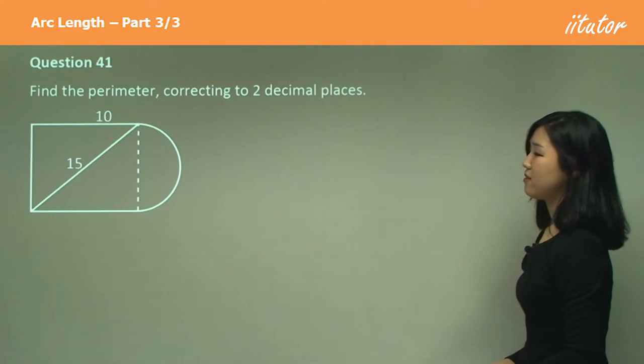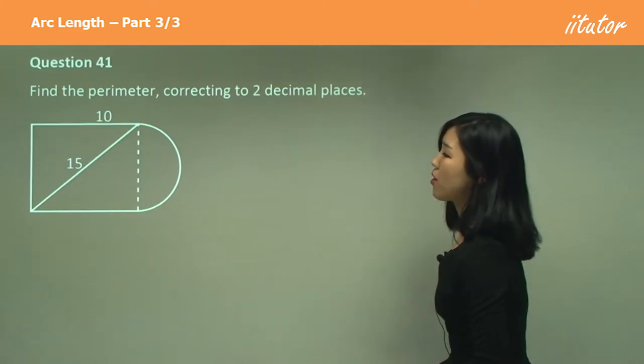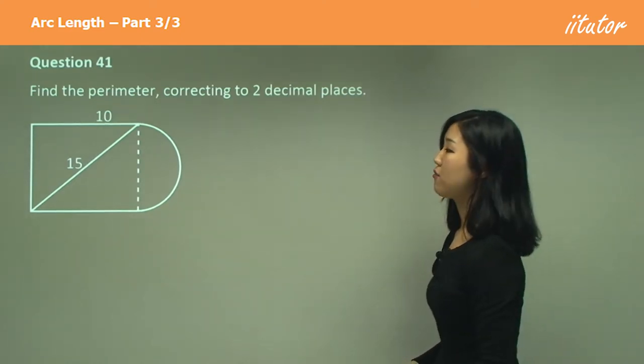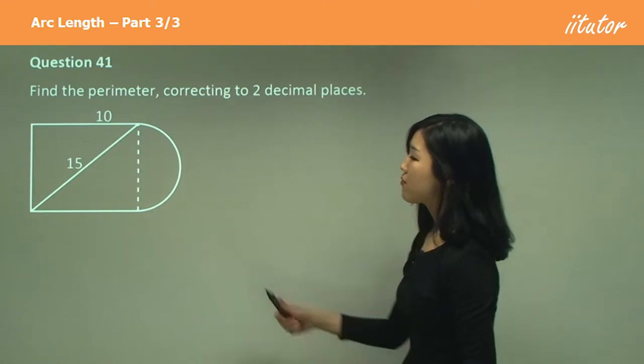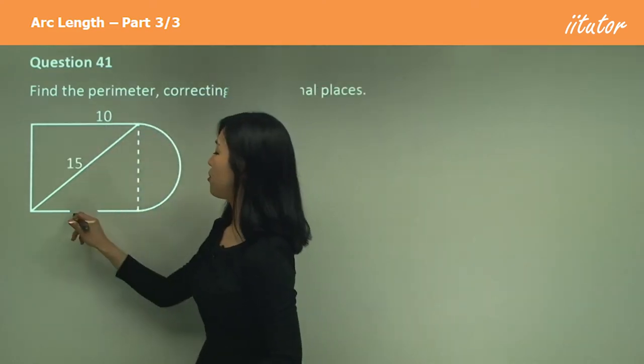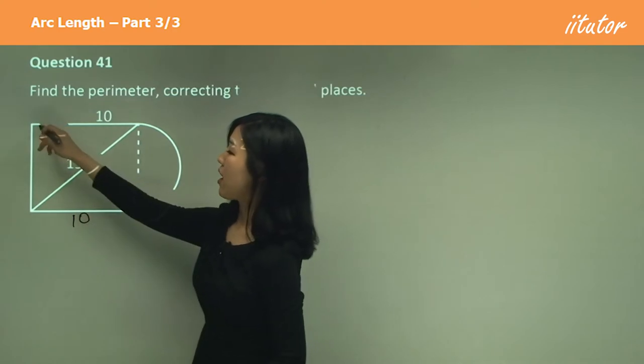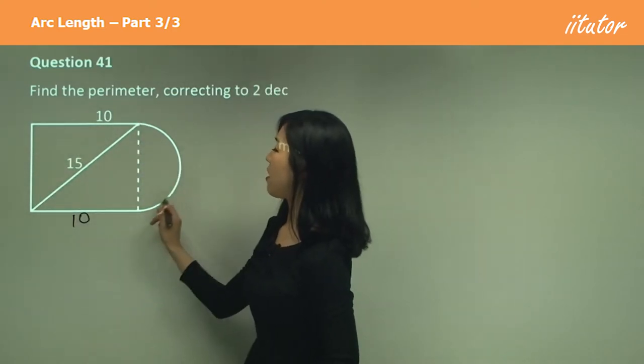Find the perimeter, correct to two decimal places. Okay, so again we want to find the perimeter of this shape. Now we've got 10, so this must also be 10, but we don't have this side and we don't have this arc.